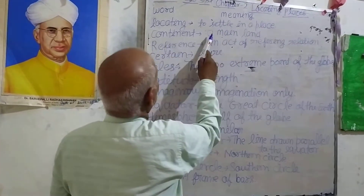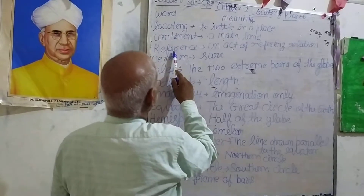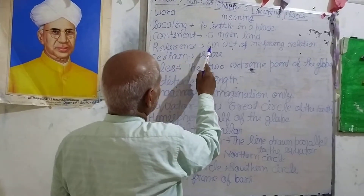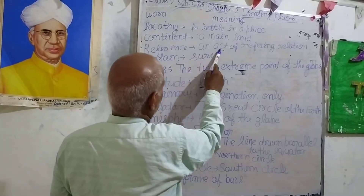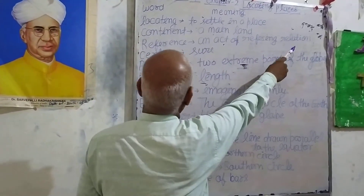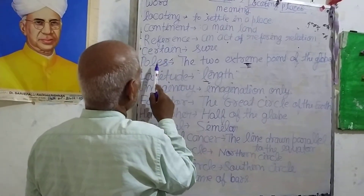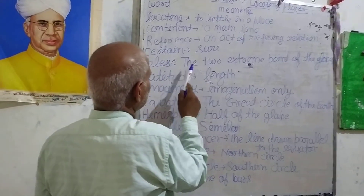Continent — mainland. Reference — referring, relation. Certain — show. Poles — the two extreme points of the globe.